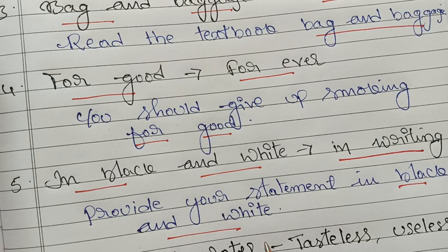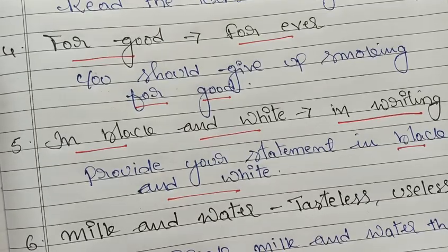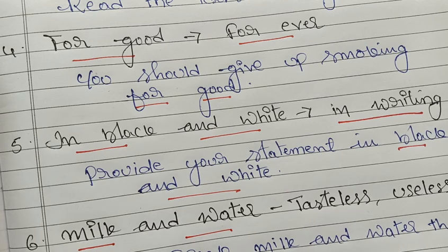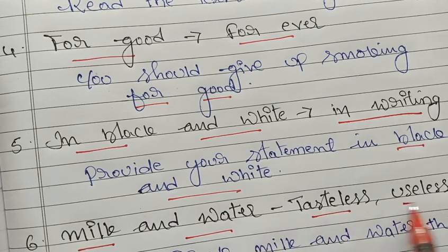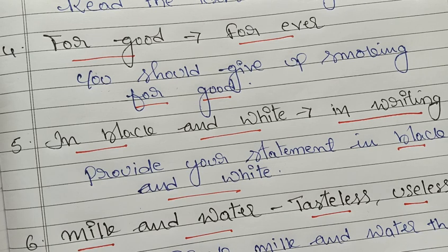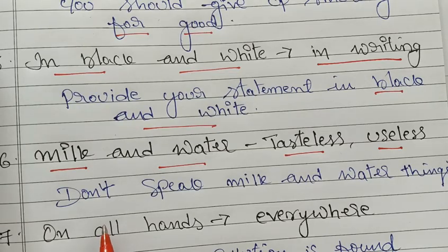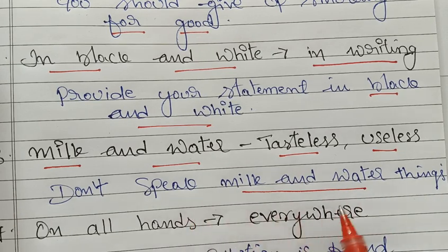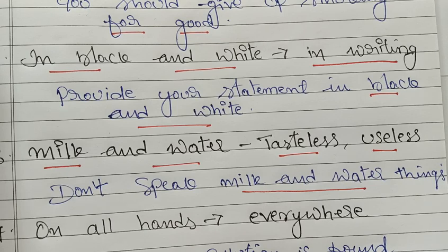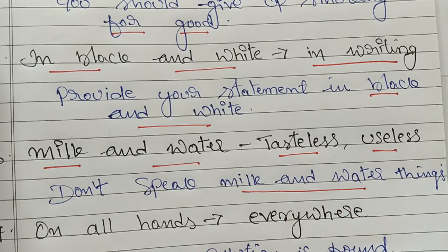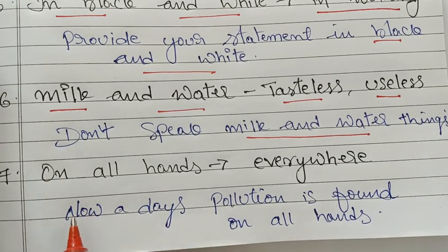The sixth phrase is 'milk and water.' Don't think of the milk we drink — it refers to something tasteless or useless. For example: 'Don't speak milk and water things' means don't speak useless things. Or if you say 'Today my food is milk and water,' it doesn't mean your mom gave you milk and water — it means today your food is tasteless, without much taste. That is the meaning of 'milk and water': tasteless or useless.